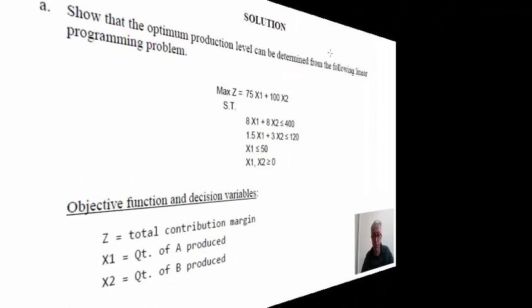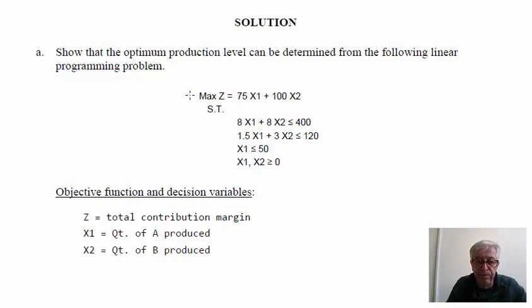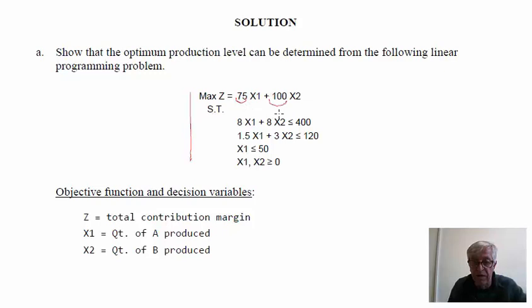In the first question, we need to show that the given linear programming problem allows us to evaluate the optimal production plan. To do this, we identify the meaning of the decision variables, the objective function, and the restrictions. The coefficient 75 is the contribution margin of product A, while 100 is the contribution margin of product B. So x1 is the quantity produced of A and x2 is the quantity produced of B, and Z becomes the total contribution margin.